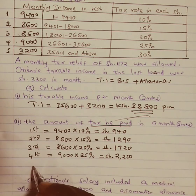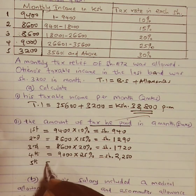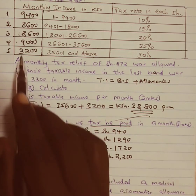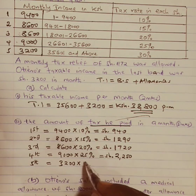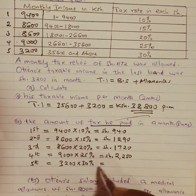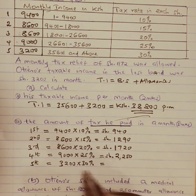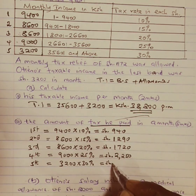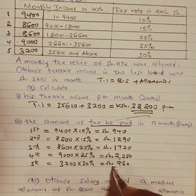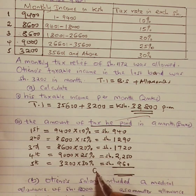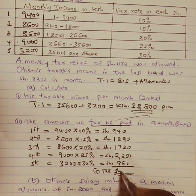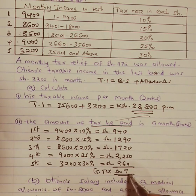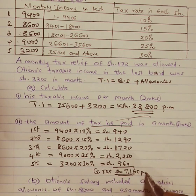And lastly, in the fifth bracket, we are taxing 3,200 at 30%. Taking 30 divided by 100 times 3,200 gives us 960. Adding all these amounts — 940, 1,290, 1,720, 2,250, and 960 — gives us the total tax, also known as gross tax, of Kenyan shillings 7,160 per month.